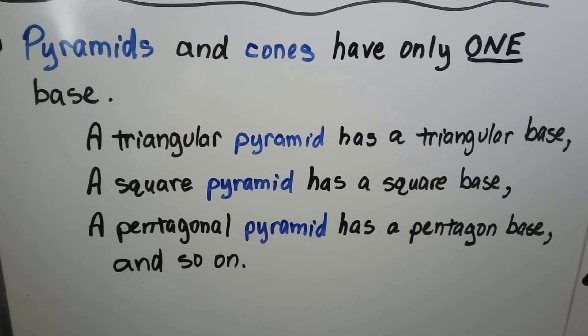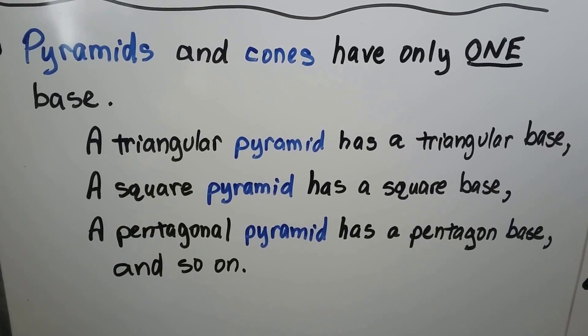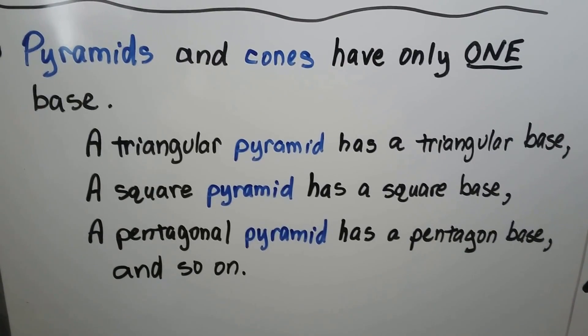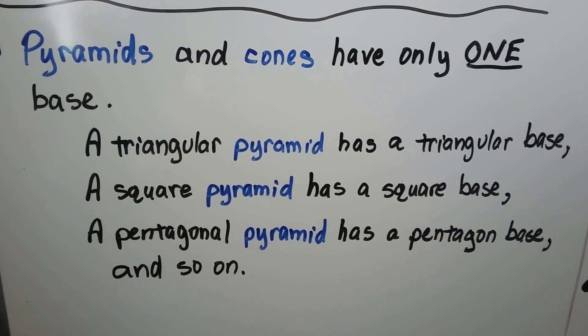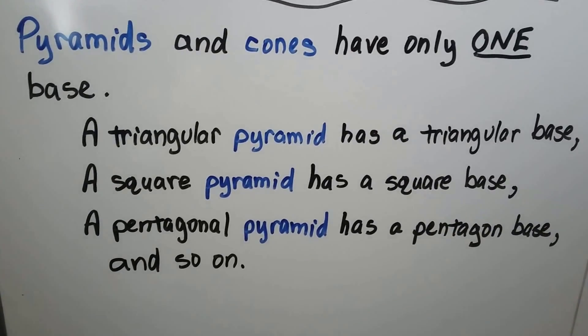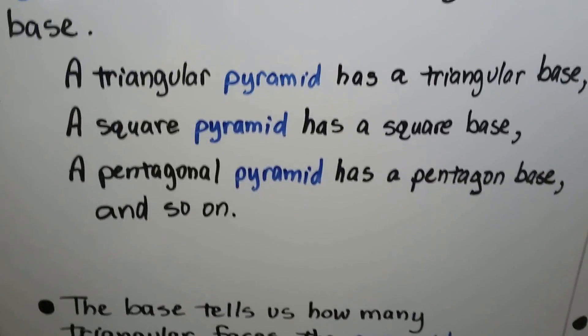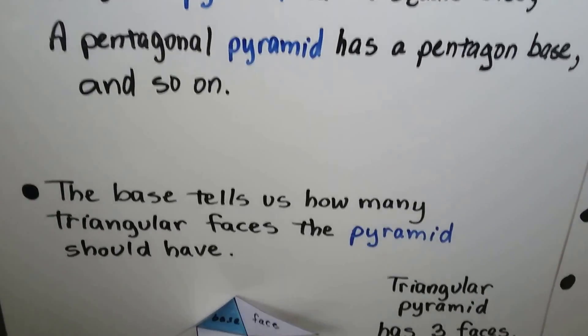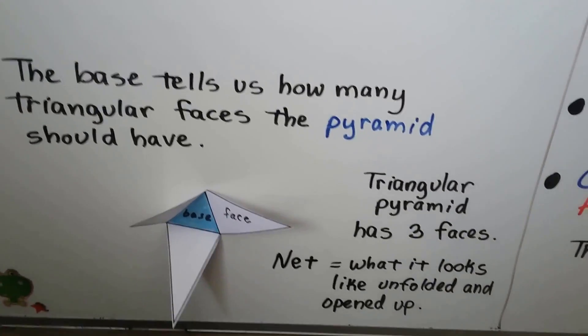Pyramids and cones have only one base. A triangular pyramid has a triangular base. A square pyramid has a square base. A pentagonal pyramid has a pentagon base, and so on. It depends on the polygon base. The base tells us how many triangular faces the pyramid should have.